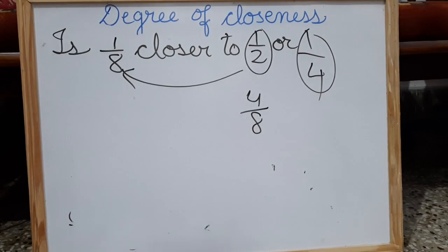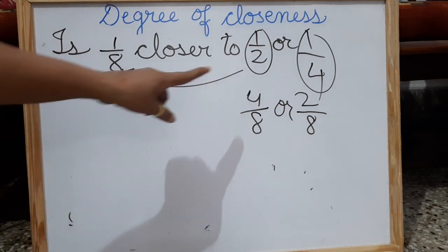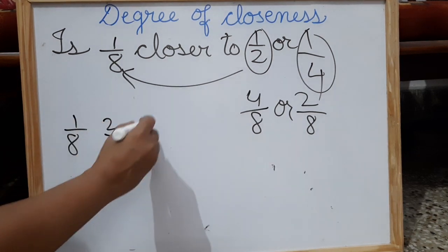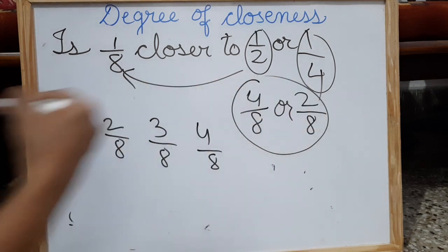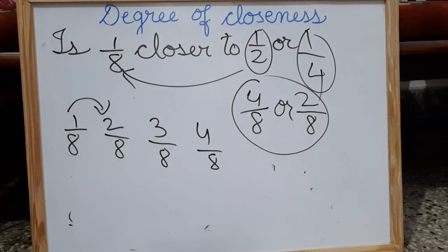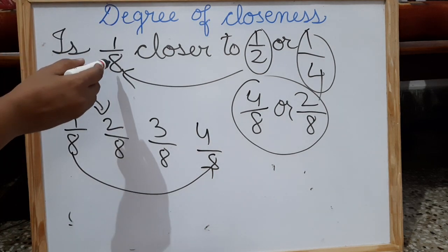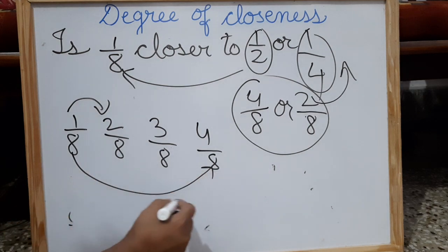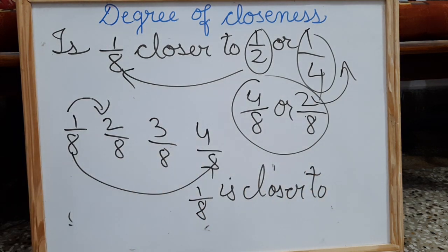So 1 by 2 becomes 4 by 8 and 1 by 4 becomes 2 by 8. Now you have to find whether 1 by 8 is closer to 4 by 8 or 1 by 8 is closer to 2 by 8. Let us write all the series: 1 by 8, 2 by 8, 3 by 8, 4 by 8, 5 by 8 and so on. So 1 by 8 is closer to 2 by 8 because after one step you move to 2 by 8, and after three steps you move to 4 by 8. So 1 by 8 is closer to 2 by 8, which is equal to 1 by 4.